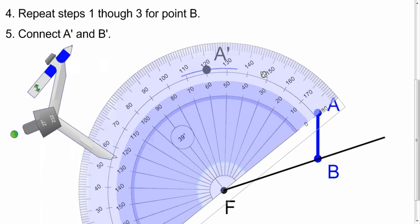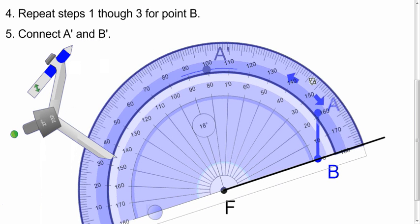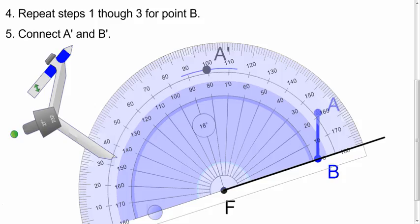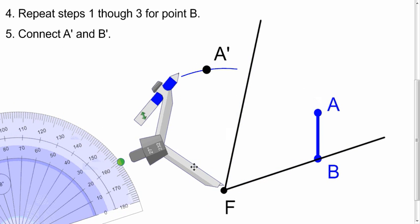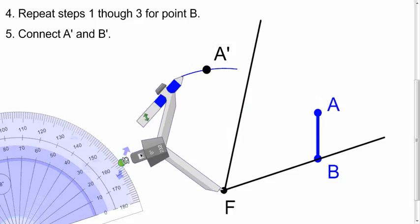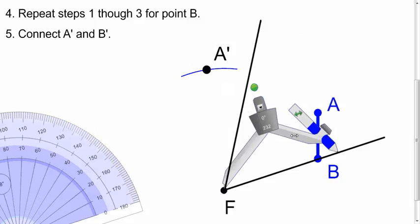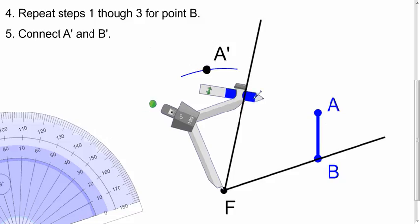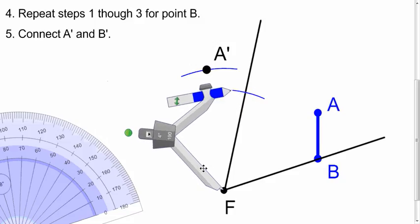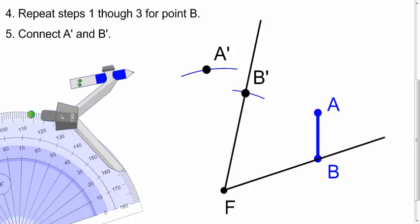So line it up again. We want to go 60 degrees. And let's see, 60 degrees is right here. Now we're going to line up the compass with F and B this time. Now we're going to cut this side. This point is going to become B prime. And so now we just connect the two points and we have our segment.